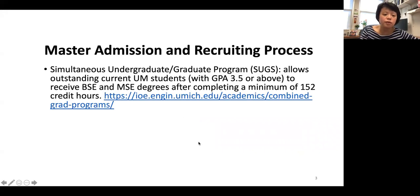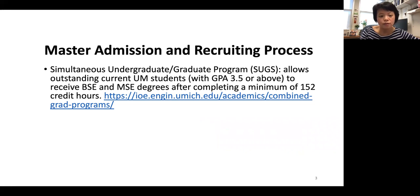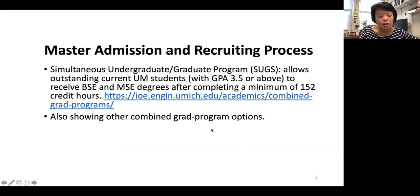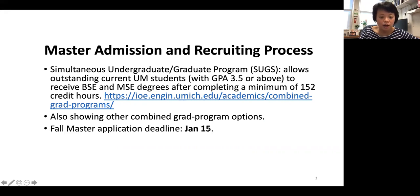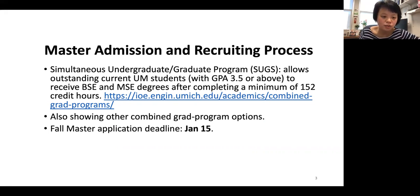For a brief overview of the master admission and recruitment process: we have a specific program called SACS, which allows current UM students with a GPA of 3.5 or above to receive both a bachelor's degree and a master's degree after completing a minimum of 152 credit hours. There are also other combined graduate program options. For other master's students coming from different universities in the US or internationally, the full master application deadline is January 15.